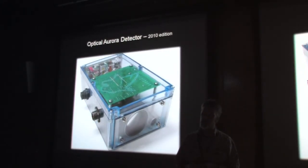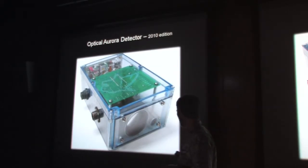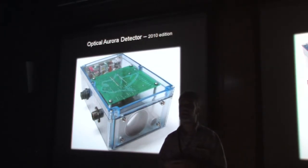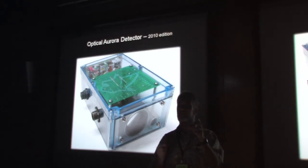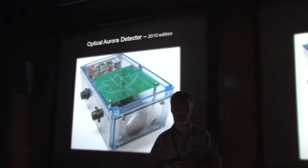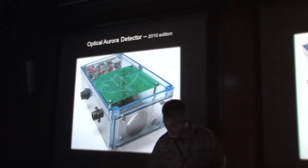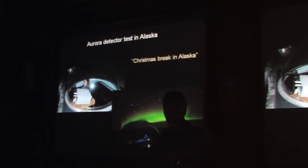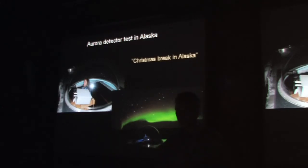We created a sensor at my lab, and we've been funded by the Montana Space Grant Consortium to build a network of these sensors across Montana. We use them to detect when there's an aurora and send cell phone text messages to alert you when there's an opportunity to see one. I took some students to Alaska to test these — we spent Christmas break one year and spring break another year in Alaska. A few great things you get to do as a student.